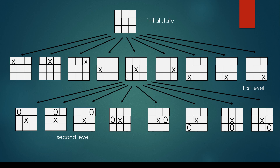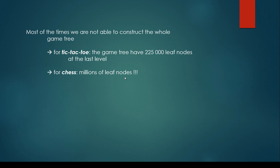For chess, it would be impossible to construct the whole game tree. Most of the time we are not able to construct the whole game tree. For tic-tac-toe, the game tree has around 225,000 leaf nodes at the last level — a huge amount, but we are able to cope with it in the 21st century. Even so, we are not able to handle chess, because for chess the game tree would have millions and millions of leaf nodes at the last level.